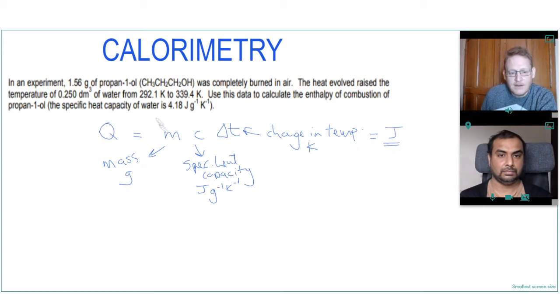So when we put our grams in here, specific heat capacity and temperature change, the answer will be given in joules not kilojoules. The other thing we have to be careful of is the mass. So in the question here a lot of students will put in the mass of 1.56 grams because that's the mass given in the question.